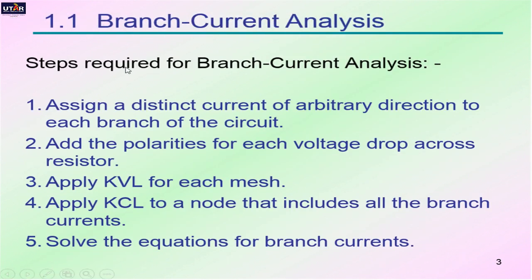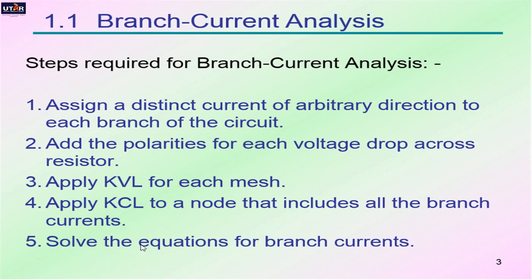Here are the steps to perform branch current analysis. First, we assign a distinct current of arbitrary direction to each branch of the circuit. Then we add the polarities for each voltage drop across the resistor or any element. Then we apply Kirchhoff's voltage law for each mesh, which states that the sum of voltages in a mesh or loop equals zero. Then we apply Kirchhoff's current law to a node — the sum of currents going into and out of a node equals zero. Finally, we solve the equations for the branch currents.